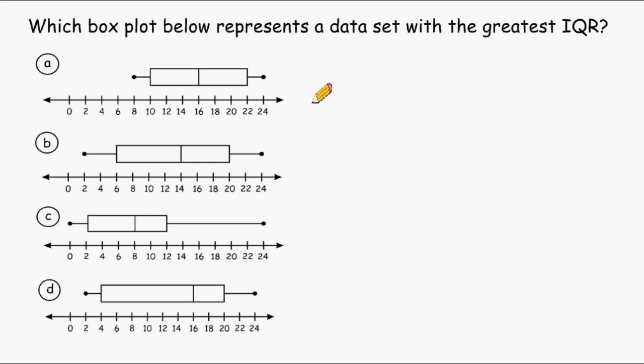For this problem, we have to determine which box plot represents a data set with the greatest IQR. Now, the IQR of a box plot always starts at the beginning of your boxes. For box plot A, the box starts at the number 10 on the number line and goes all the way to number 22. So what we have to do is figure out what is the distance from 10 to 22.